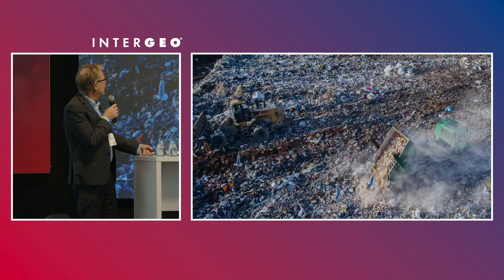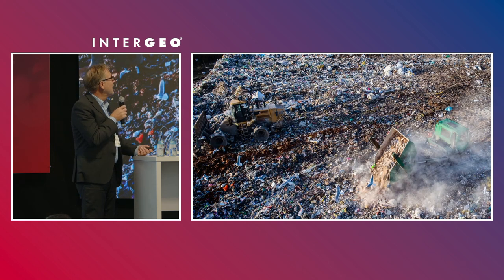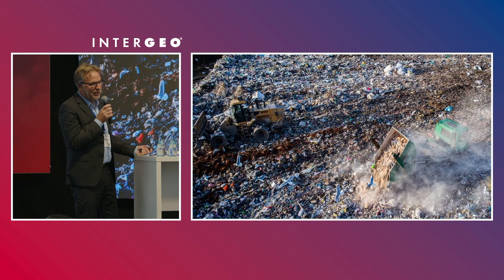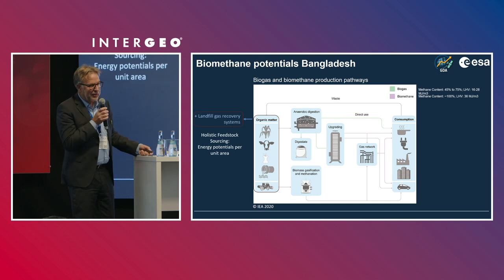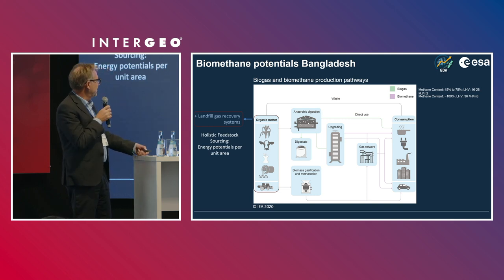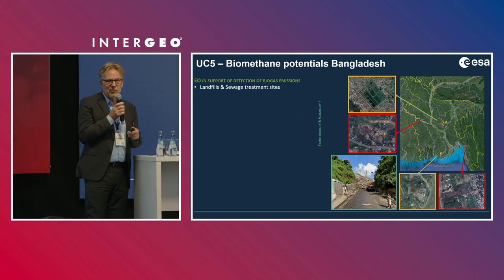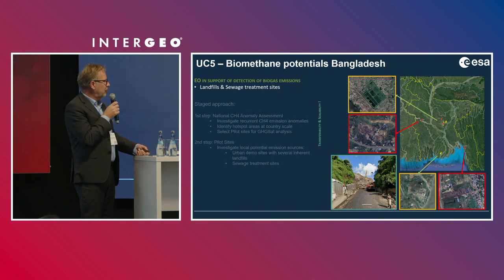Another example is waste. Waste is a big issue, also in Bangladesh, and the discussion we had is how we can use waste for energy. Looking at the organic matter on the left side, this could be used in landfills for the production of methane. Sentinel-5P, for example, is a satellite that can be used to detect these landfills. The problem is most landfills are not documented — they are illegal, they are very large in that area, and they are a resource of energy.